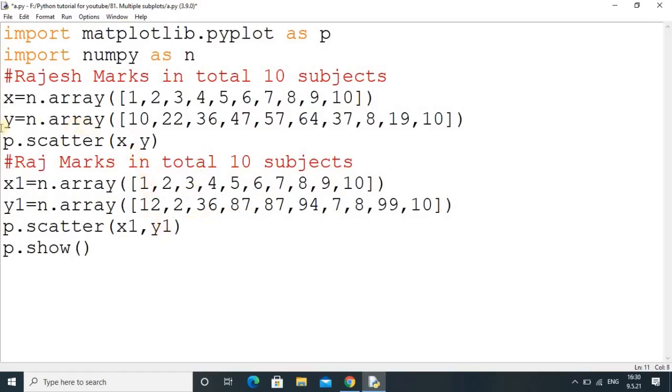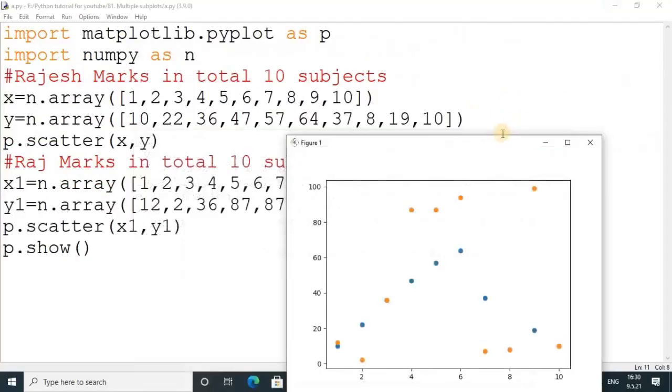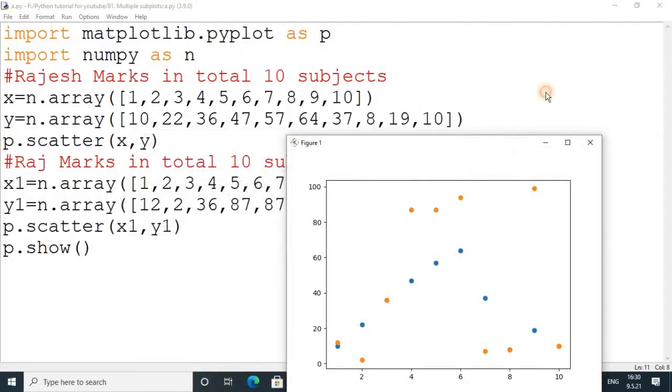We created two scatter graphs for the comparison of two students. Now we will run this. This is the scatter graph and we are doing the comparison of two students.